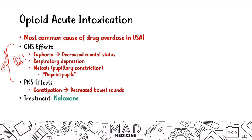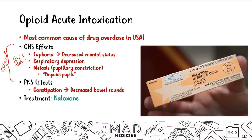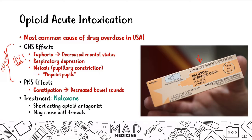To treat someone with acute opioid intoxication, you give them naloxone. This is a short-acting opioid antagonist. It may also cause opioid withdrawal, but for treatment of acute intoxication, naloxone is what you administer.